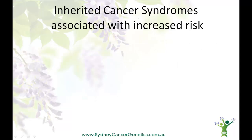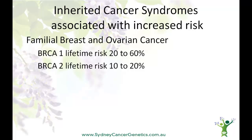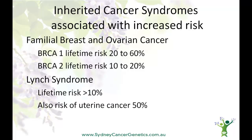Some inherited cancer syndromes are associated with a lifetime risk of ovarian cancer that's significantly higher than 1%. In the familial breast and ovarian cancer syndrome, which is associated with the BRCA — that is, breast cancer 1 and breast cancer 2 genes — BRCA1 and BRCA2 are associated with lifetime risks of the order of 10% to 60%. Another example is Lynch syndrome, which carries a high risk of colon cancer, but also for women a significantly increased risk of ovarian cancer and a risk of uterine cancer of about 50% over a woman's lifetime.